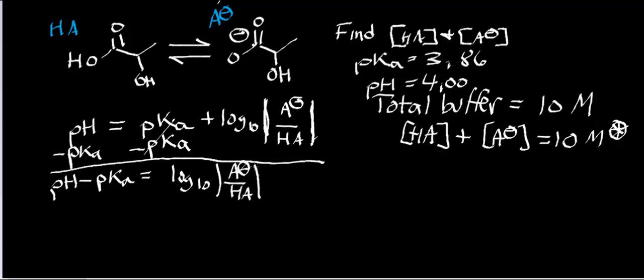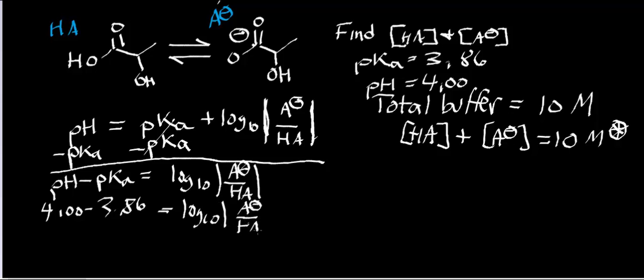So we get: pH minus pKa equals log base 10 of [A-] divided by [HA]. Plugging in our numbers: 4.00 minus 3.86 equals log base 10 of [A-] divided by [HA]. Subtracting 4.0 minus 3.86 gives us 0.14.